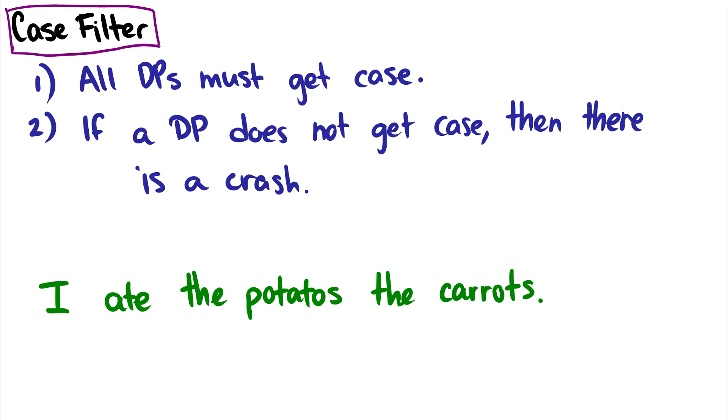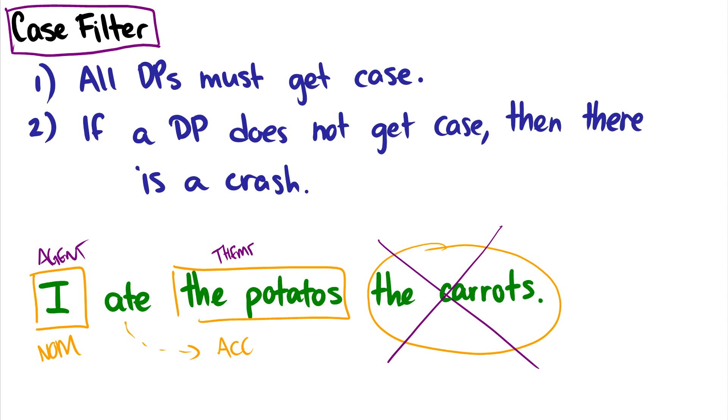Two, if a DP does not get case, then there is a crash. So consider the sentence below. I eat the potatoes, the carrots. Well, I is getting nominative case from T. The potatoes gets accusative case from the verb. And then we have the carrots here. And there's nothing to give it case. So this sentence is not grammatical. And we have a pretty decent explanation of why. The first thing is eat only has two theta roles. So this is the agent. And here we have a theme, the potatoes. So the carrots doesn't get a theta role. But it also doesn't get case. So it can crash because of either reason.